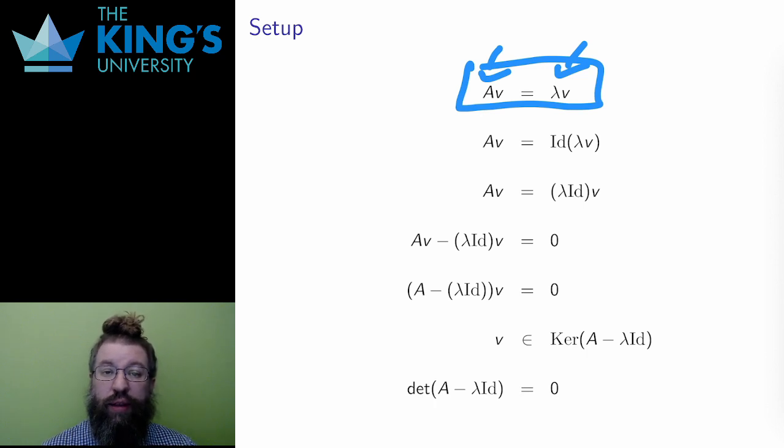To that end, let me put the identity matrix on the left. Lambda v is the same thing as identity lambda v, since the identity doesn't do anything.